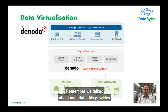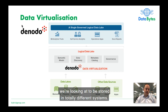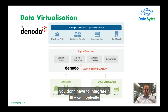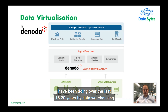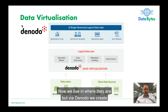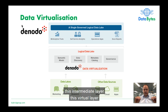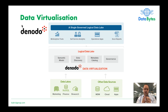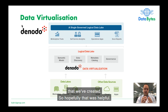Remember we talked about metadata — this provides context to the unstructured data. The two will be stored in totally different systems almost always: your data lake on one side and your relational metadata on the other. Well, data virtualization means you don't have to move this data or integrate it like you've been doing over the last 15 to 20 years via data warehousing. By using Denodo, we create an intermediate virtual layer which joins the disparate sources so that it appears to be in one location for analysts to analyze — the metadata and the quantified output of the unstructured data.